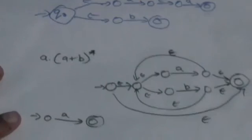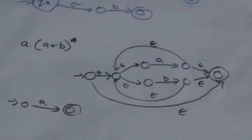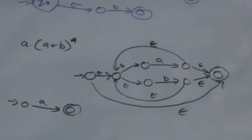Now we have to make a finite automaton corresponding to the regular expression A dot (A plus B) Kleene star. First of all we will make a finite automaton corresponding to this regular expression.